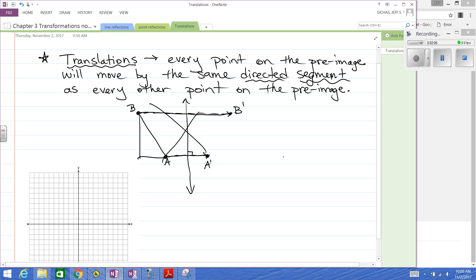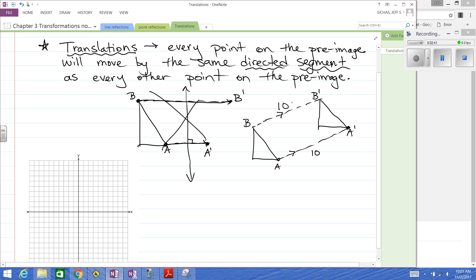So what's different about a translation is something like this will happen. You'll move every point up and over the same amount. So if this is point A, this is A prime, there's your directed segment from there to there. We'll move it in that direction. Now, say that's 10 and we're moving in that kind of a northeast direction, so to speak. If we do this, B to B prime is going to move the same amount in the same northeast direction. It'll be the same amount. So that's unique to translations where you know that every point is going to move the same distance, same amount, same direction, everything.